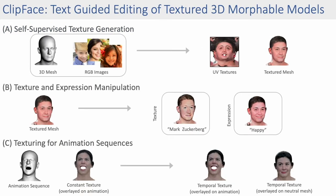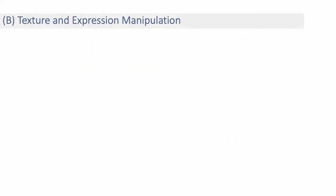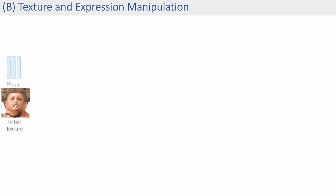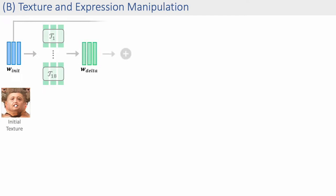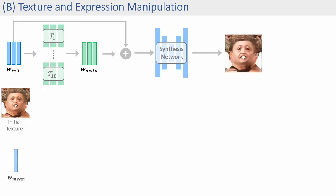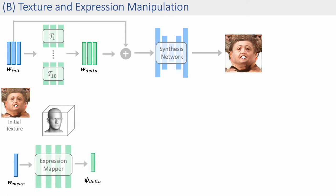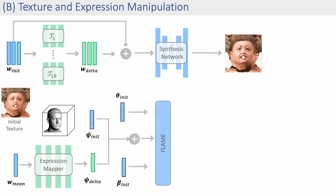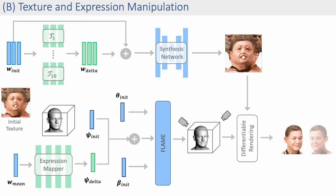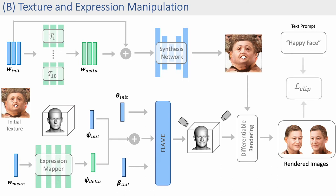We then perform text-guided texture and expression manipulation by learning mappings in the space of our trained texture model and the expression space of the morphable model. For an initial texture map, we pass its latent code to the texture mapper to generate a texture offset, which should move the texture to match the given text prompt. To manipulate the expression, we take the mean latent code and pass it to an expression mapper to generate an expression offset. The texture and expression mappers are learned through differentiable rendering, supervised by a clip loss against the text prompt. We can additionally manipulate only texture by using a frozen expression mapper.